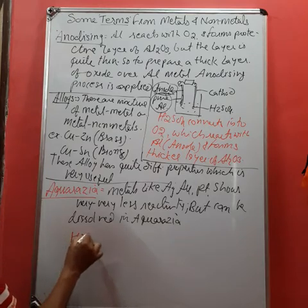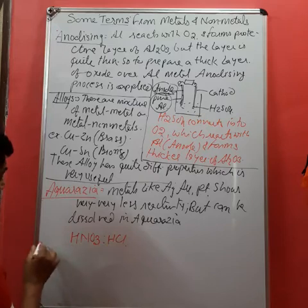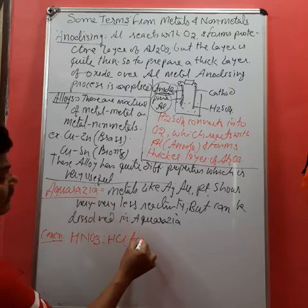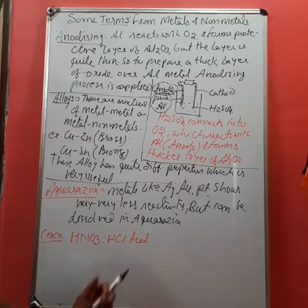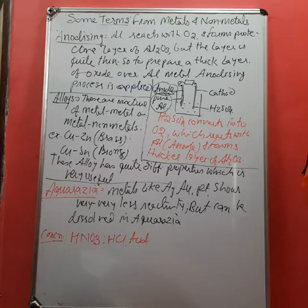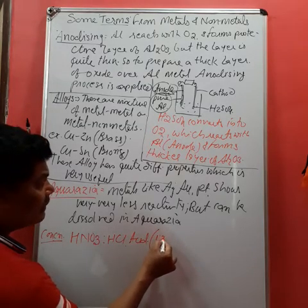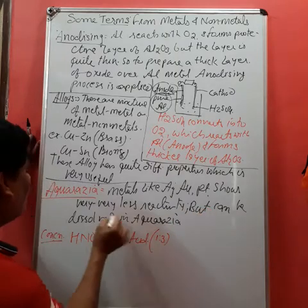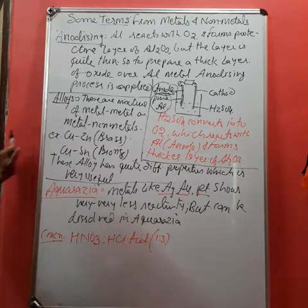What is aqua regia? Aqua regia is the mixture of concentrated HNO3 and HCl acids. This substance has the ability to dissolve even silver, gold, and platinum.